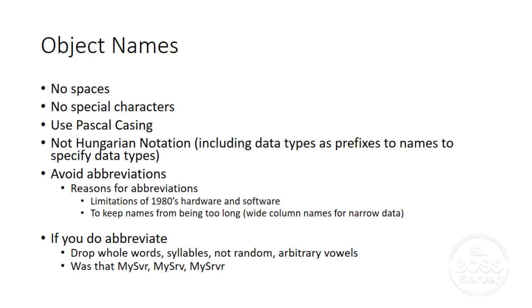Avoid abbreviations. We had abbreviations to make shorter column names, and this was imposed upon us by early 1970s and 80s hardware and software — largely removed now. If you do abbreviate, try dropping whole words or whole syllables, not random arbitrary vowels. That arbitrary vowel thing will make everyone miserable.